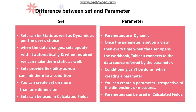Sets can be static as well as dynamic as per the user's choice. We can limit a set to be static — once we create a static set we can remove members from it, but we won't be able to add values to a static set. In a dynamic set we will be able to add as many members as required. Parameters are dynamic and will allow us to add as many values as required based on the data type of the parameter created. When the data changes, sets update automatically.